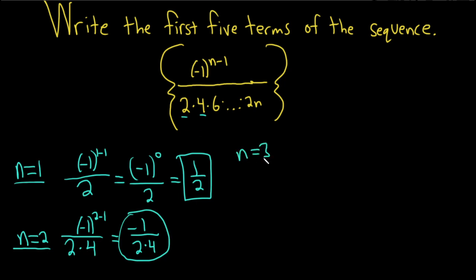When n equals 3, we have negative 1 to the 3 minus 1, and this time it's 2, 4, 6. You see the pattern—you get three numbers on the bottom. This is negative 1 squared, which is 1, so we have 1 over 2, 4, 6.